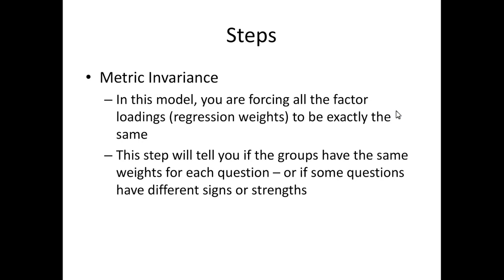If that step works, you move on to metric invariance. Here we're forcing all the loadings to be the same. This tests whether each item has the same strength for both groups of participants — or is one item particularly bad for one group because it doesn't apply to them? This will really tell you if all your items are useful for both groups, or if some have different signs (positive for one group, negative for another), or just different strengths — really good for one group, sort of bad for another.